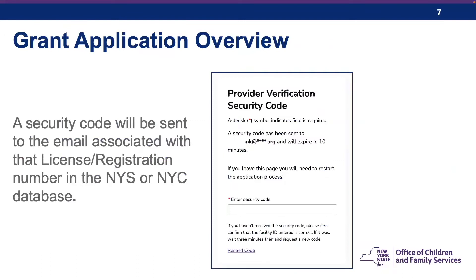After selecting your facility, a security code will be sent to the email associated with that license or registration number in the New York City or New York State database. If you do not receive the security code, be sure to check your spam or junk folder. The code is good for 10 minutes. After locating the security code, return to the application and enter it into the field, then click the Next button.